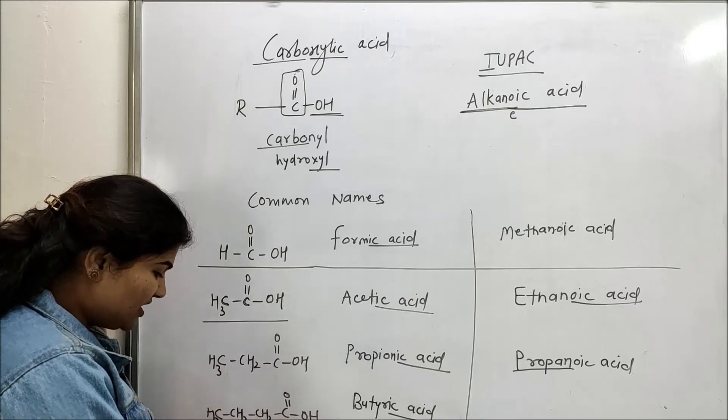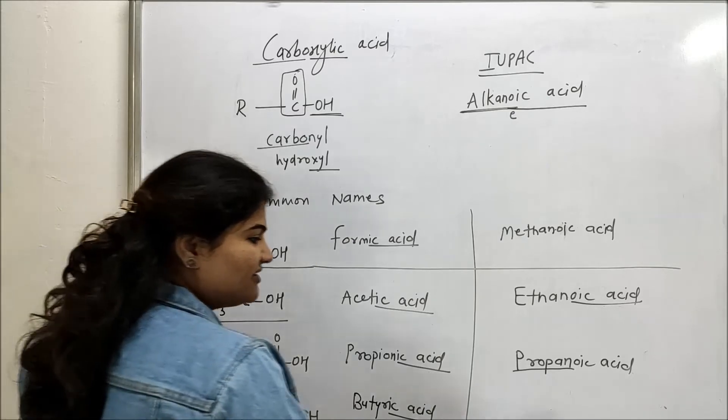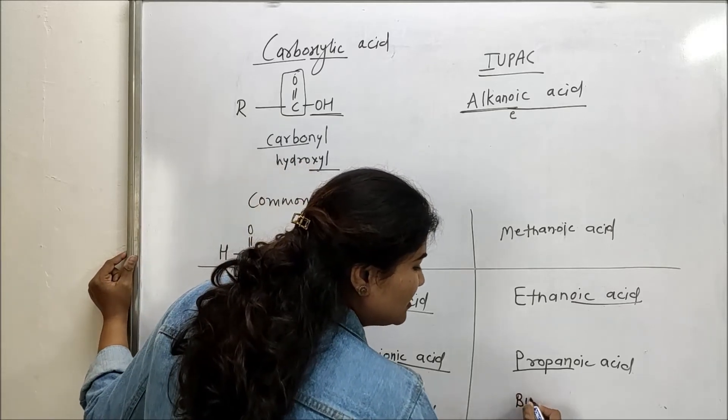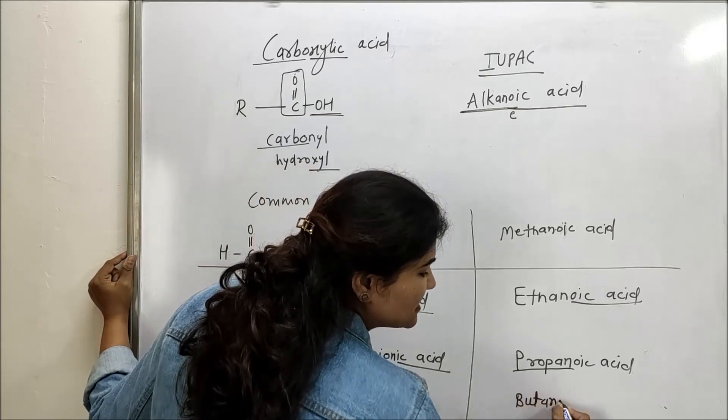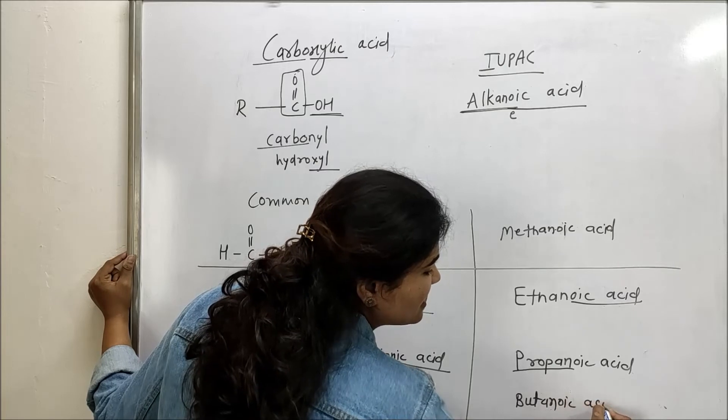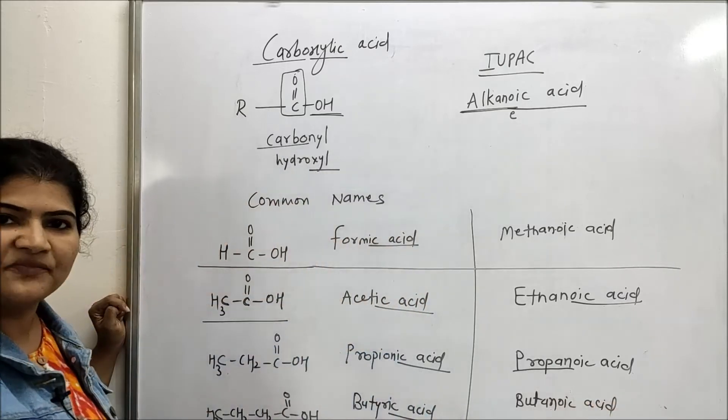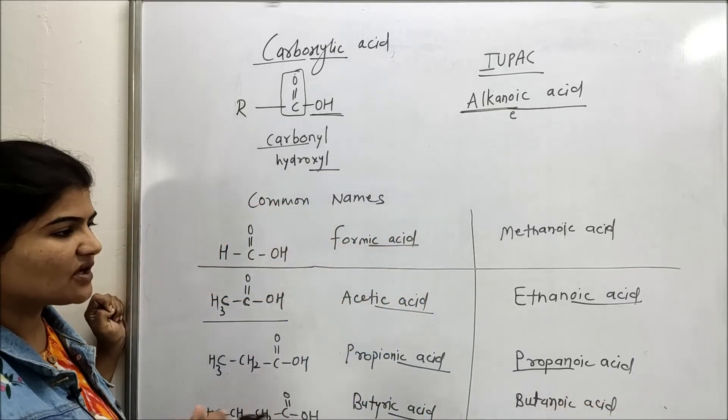Similarly, for one, two, three, four, four carbon containing derivative, the name will be butane and E is replaced by OIC acid. So it becomes butanoic acid. This is how we are going to derive the IUPAC names.